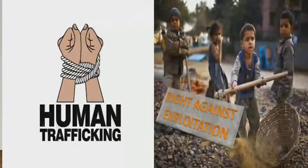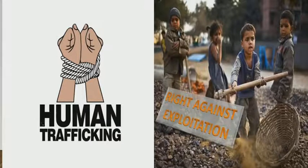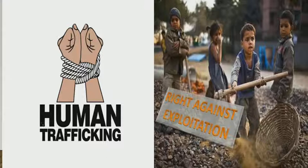Here is the right against exploitation. The Constitution provides for abolition of trafficking in human beings, beggary, and forced labor. It also includes a ban on the employment of children below the age of 14 years in dangerous jobs like mines and factories.